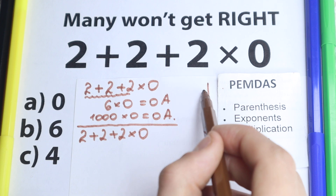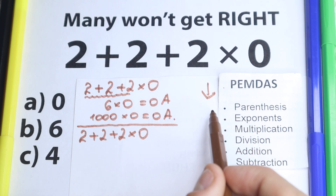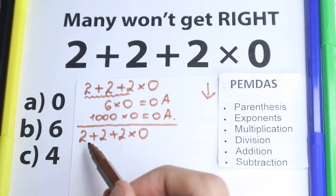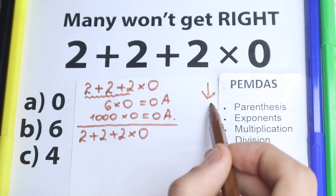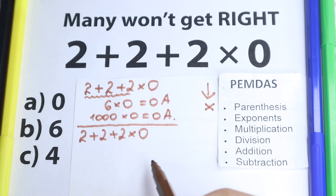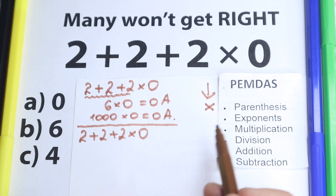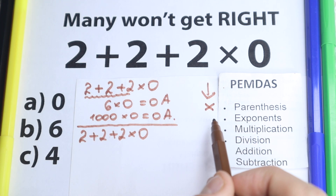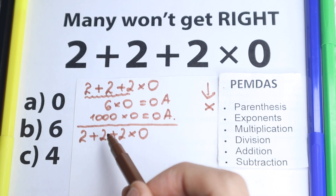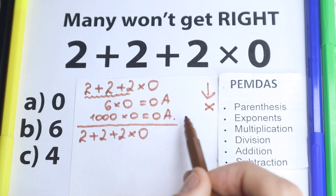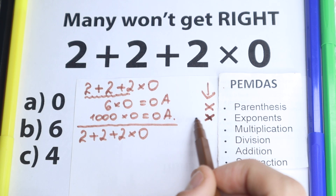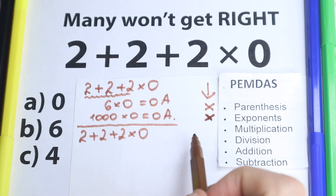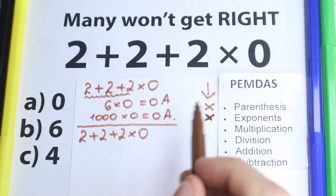First step according to PEMDAS is parentheses. Do we have any parentheses? No, so we skip this step. Next: exponents. Do we have any exponents? No, so we skip that too. Without parentheses or exponents the question is simpler for us. We move to the next group: multiplication and division.